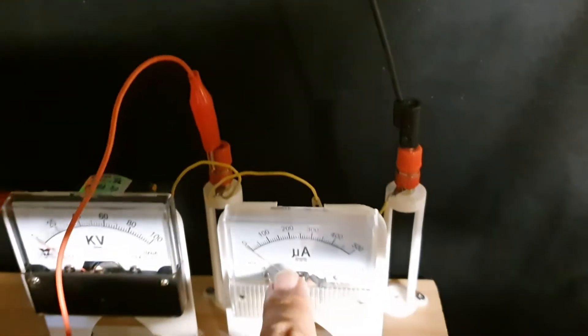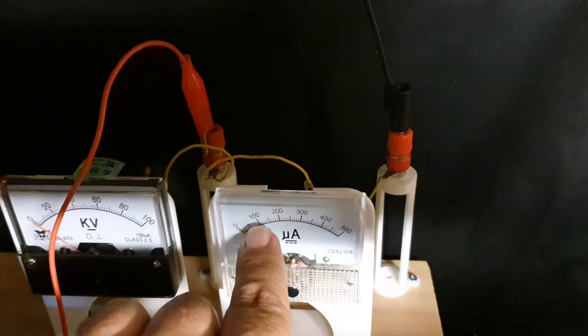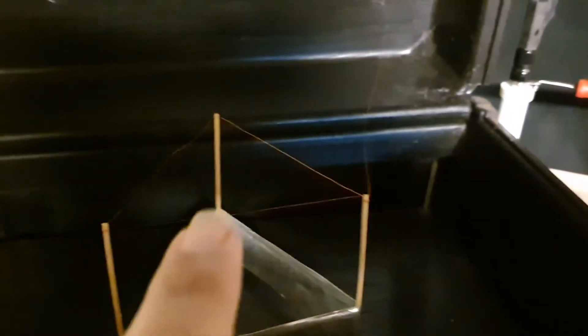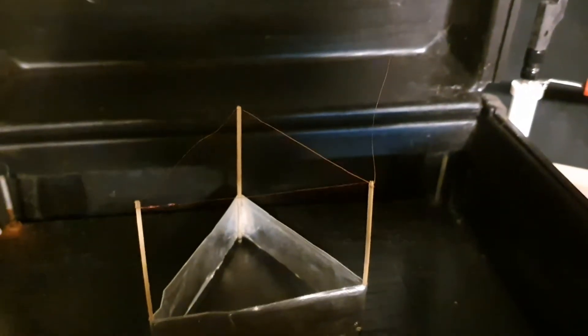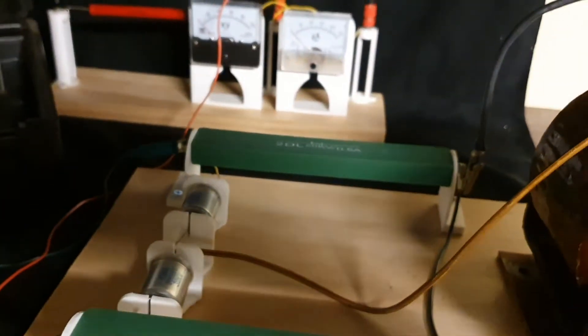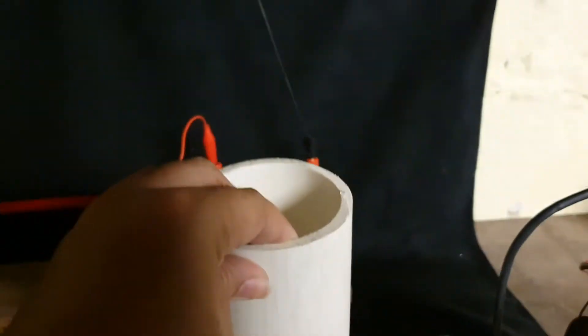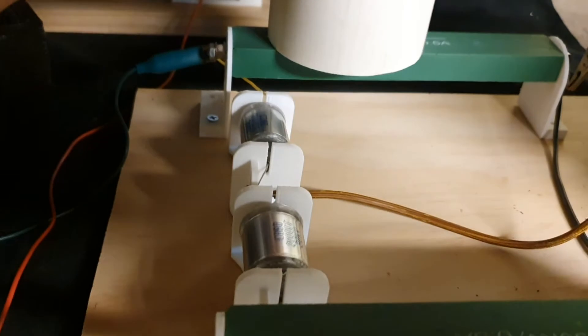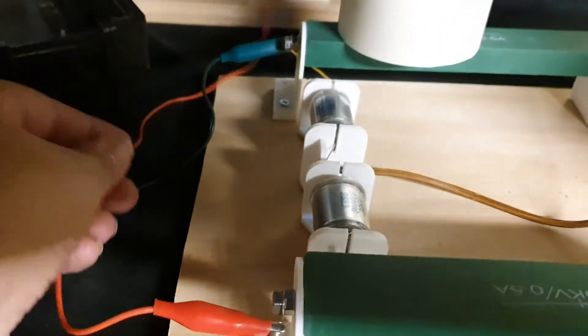And the current will flow through the microamp meter—you'll see it deflect—and exit this cable and go to this terminal here, which goes to the high voltage lead wire of the lifter connector. I'm just going to put a little piece of PVC here just to keep the wires from crossing.